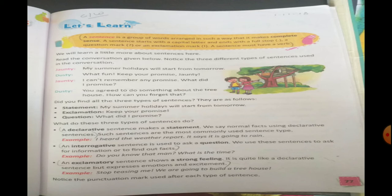So we have read a conversation that has taken place between Jaunty and Dusty. Did you find all three types of sentences? The first one is statement: My summer holidays will start from tomorrow — full stop. That is declaring something. Next is exclamation: Keep your promise — exclamation mark, expressing some emotion. And the last one is question: What did I promise? — question mark. So what do these three types of sentences do?